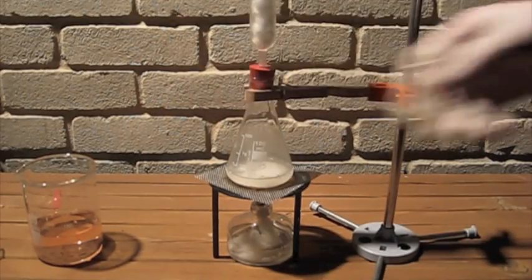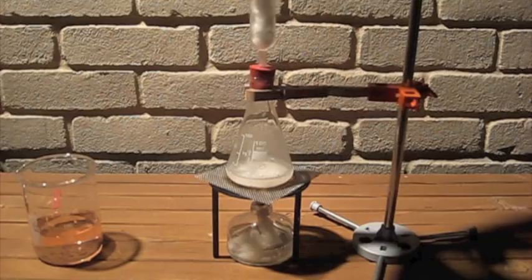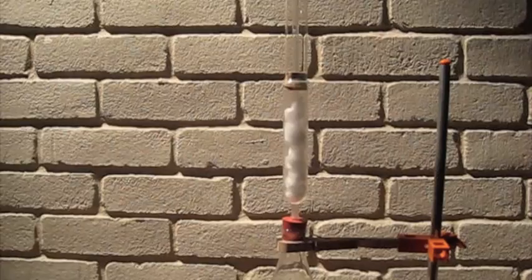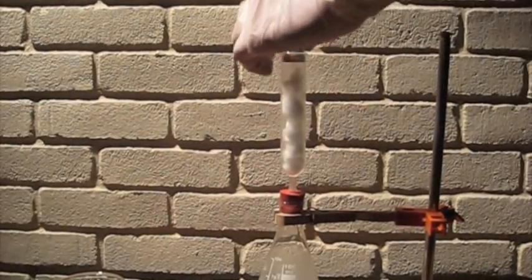To the flask I'm adding a test tube that came in my kit with some cotton wool in it and another test tube on top with a glass rod which extends into it. The ammonia will come from that glass rod.